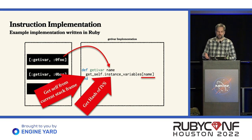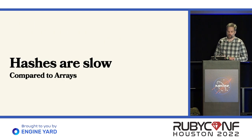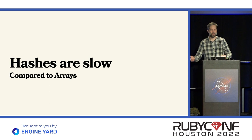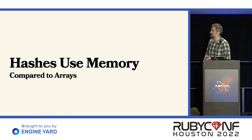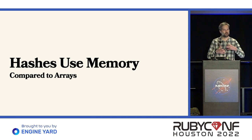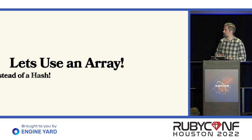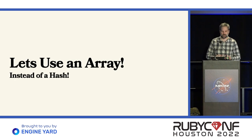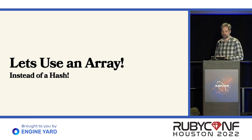The problem with this implementation is that hashes are slow when compared to arrays. Hashes use a lot of memory when compared to arrays, because the hash data structure uses a lot more room than an array would. So could we use an array instead of a hash? The answer is yes. Let's imagine how we might implement something like that.